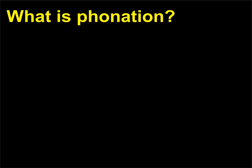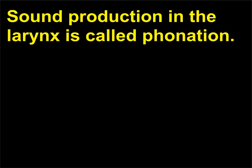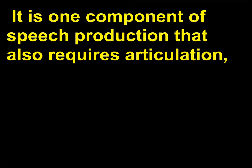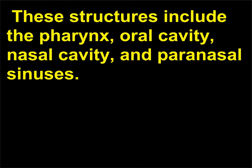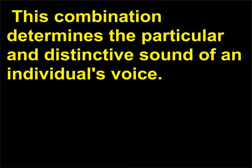What is phonation? Sound production in the larynx is called phonation. It is one component of speech production that also requires articulation, or the modification of those sounds by other anatomical structures. These structures include the pharynx, oral cavity, nasal cavity, and paranasal sinuses. This combination determines the particular and distinctive sound of an individual's voice.